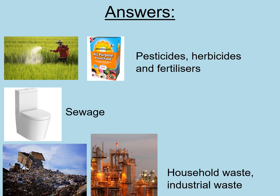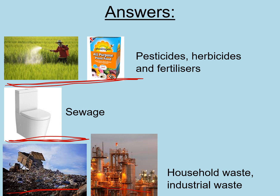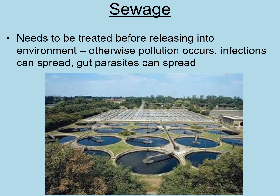Here are your answers. Firstly, pesticides, herbicides, and fertilizers damage the land — we use these for farming but they can cause issues. Secondly, sewage — nowadays sewage goes through pipes and gets treated. And lastly, household waste and industrial waste cause damage to the environment by taking up land, and industrial waste can be a big issue if it's not treated properly.